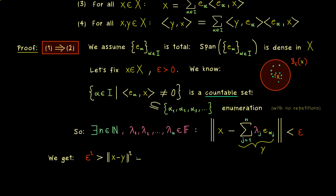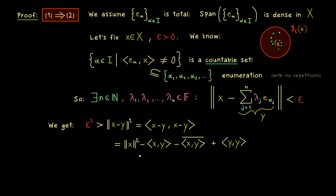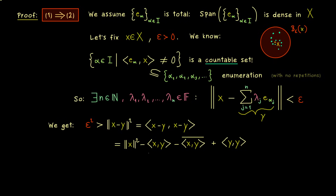Squaring means we can use the inner product as usual, which allows us to separate it into three terms. The first one is the norm of x squared. The two middle parts are essentially the inner product of x with y and its complex conjugate. The last one is the norm of y squared, written with an inner product. The first part is already what we want for Parseval's identity, and the other ones we have to simplify.